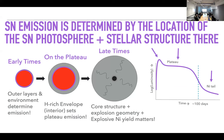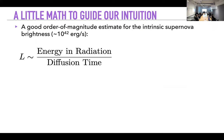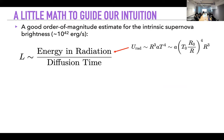We want to be able to constrain nickel nucleosynthesis — if we measure the nickel tail we want to say what the explosion energy was. How do explosion properties map onto light curves? We can think about this analytically: the luminosity is just an energy divided by a timescale. If we say all the energy is in one expanding ball, the luminosity goes as the explosion energy times the radius divided by the mass.